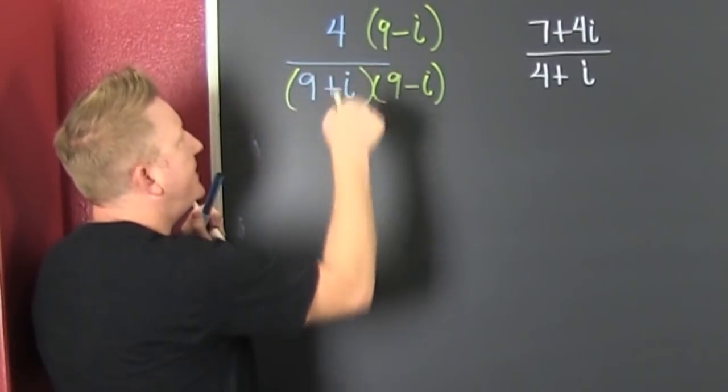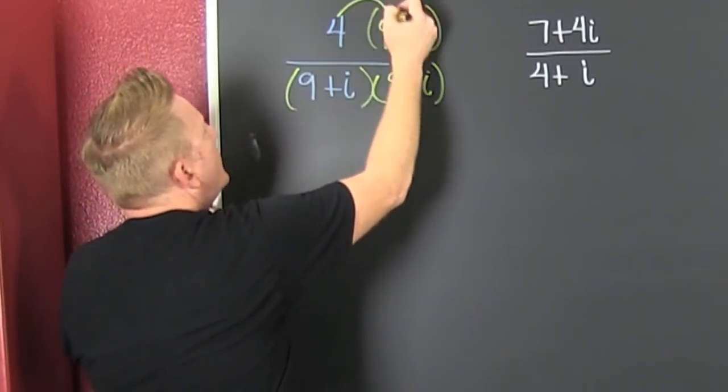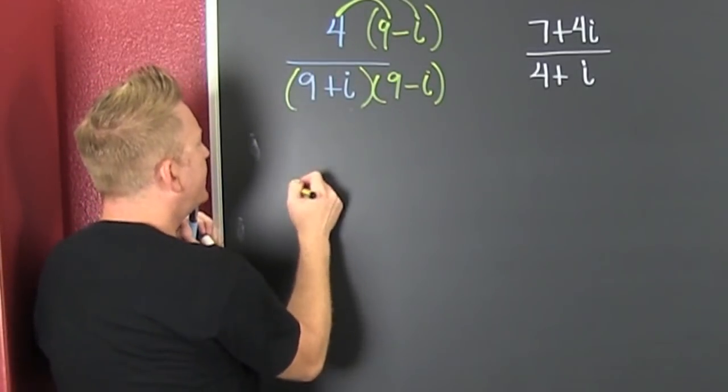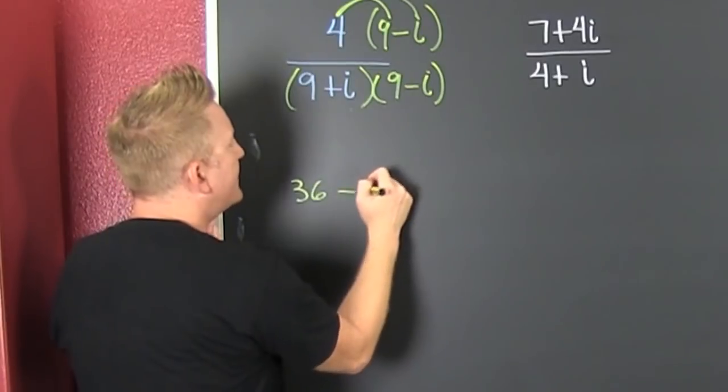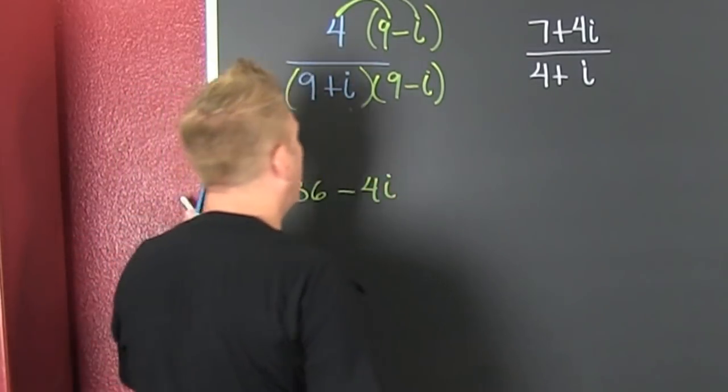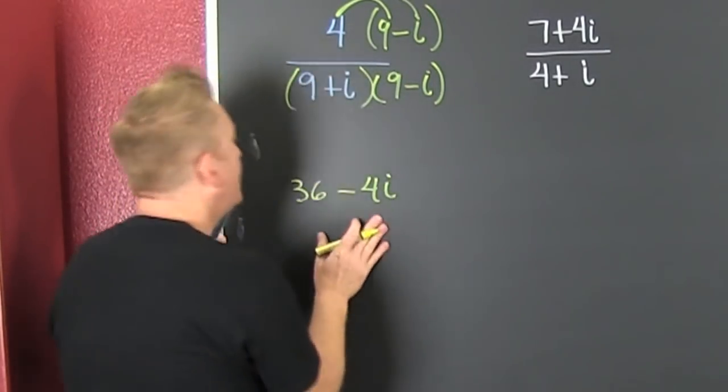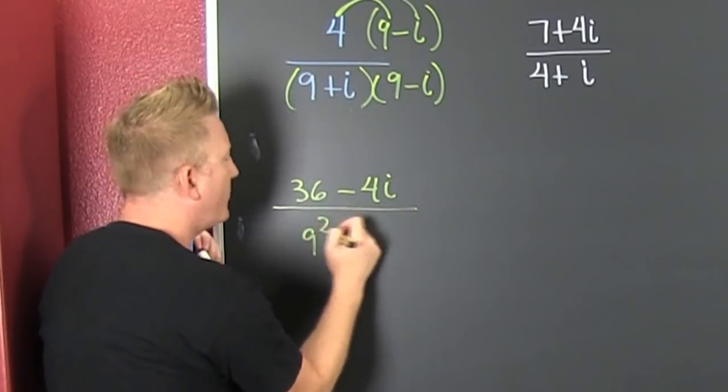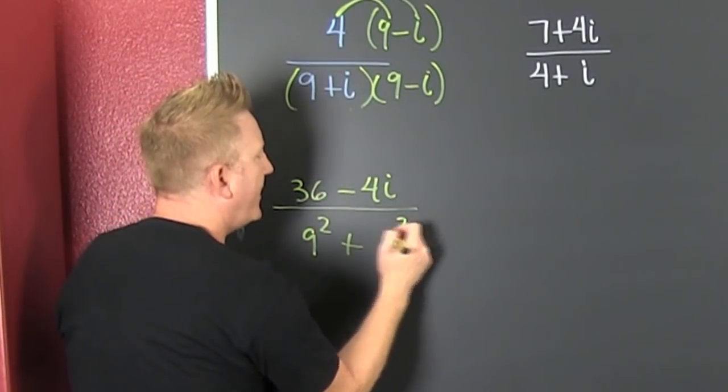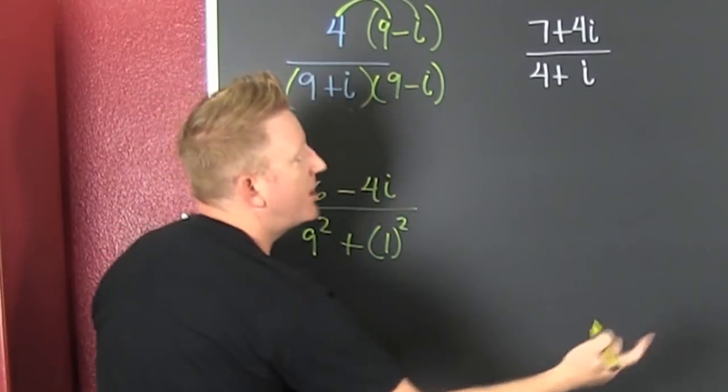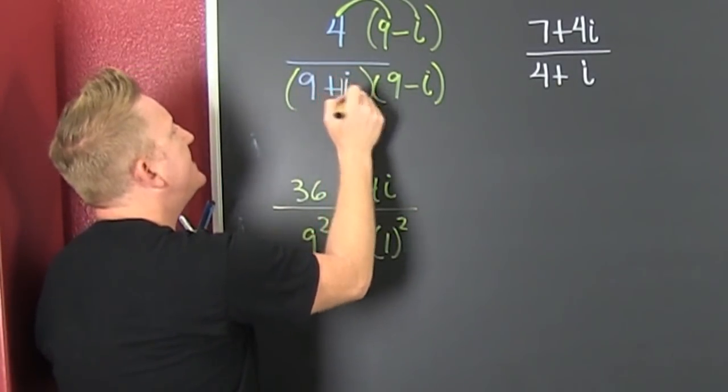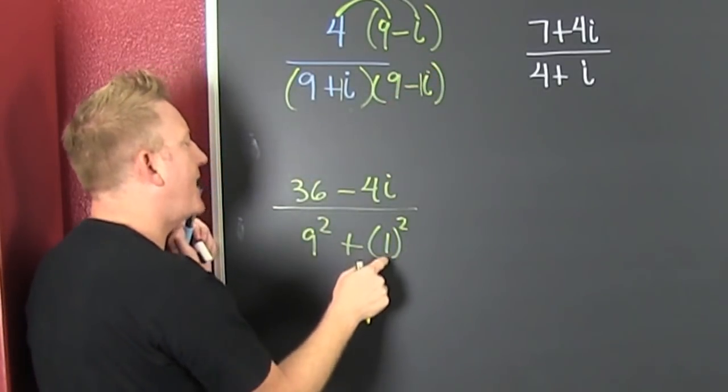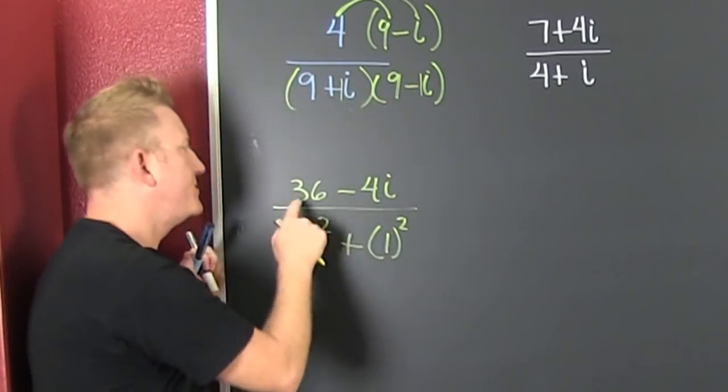And then I see in that numerator, I go, 9 times 4 on a good day is 36, and then minus 4i. Would you call me? I'm not wearing my glasses. I don't know. So, and then in the denominator, that's 9 squared plus 1 squared. Why? Because it's the sum of squares down there. And I see I have a one here and a one there. That's like that. One is squared there.